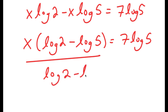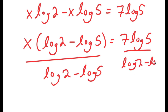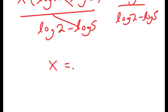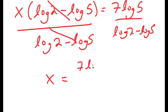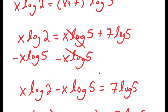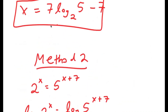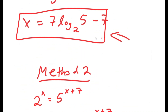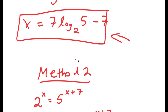So I divide log 2 minus log 5 on both sides. These two cancel out, and I get x is equal to 7 times log 5 over log 2 minus log 5, which again simplifies to x equals 7 times log base 2 of 5 minus 7.